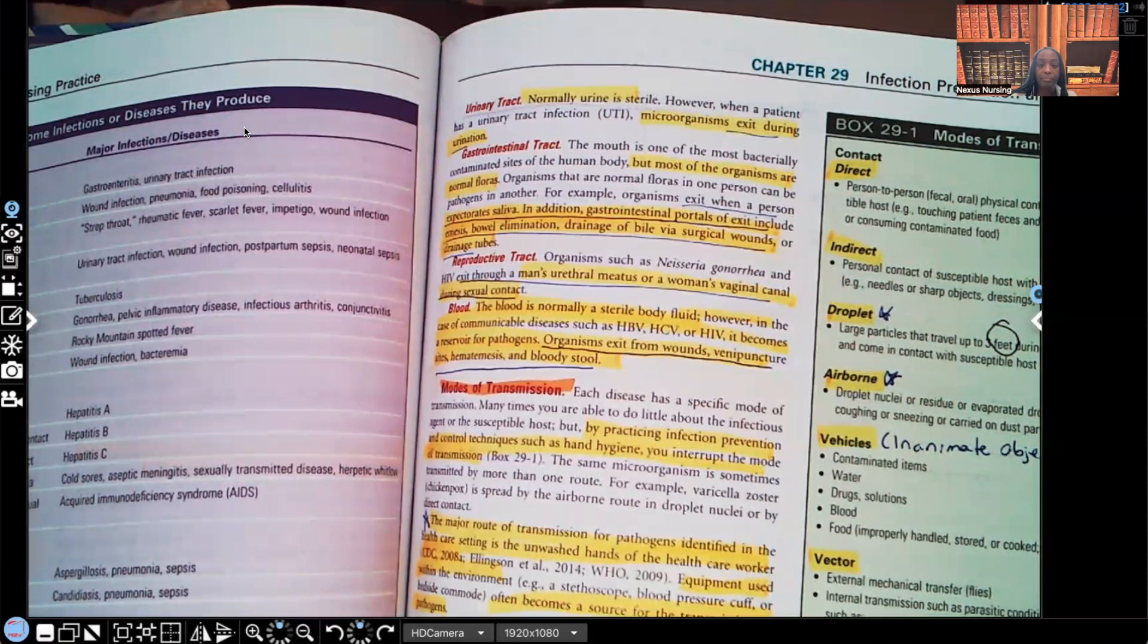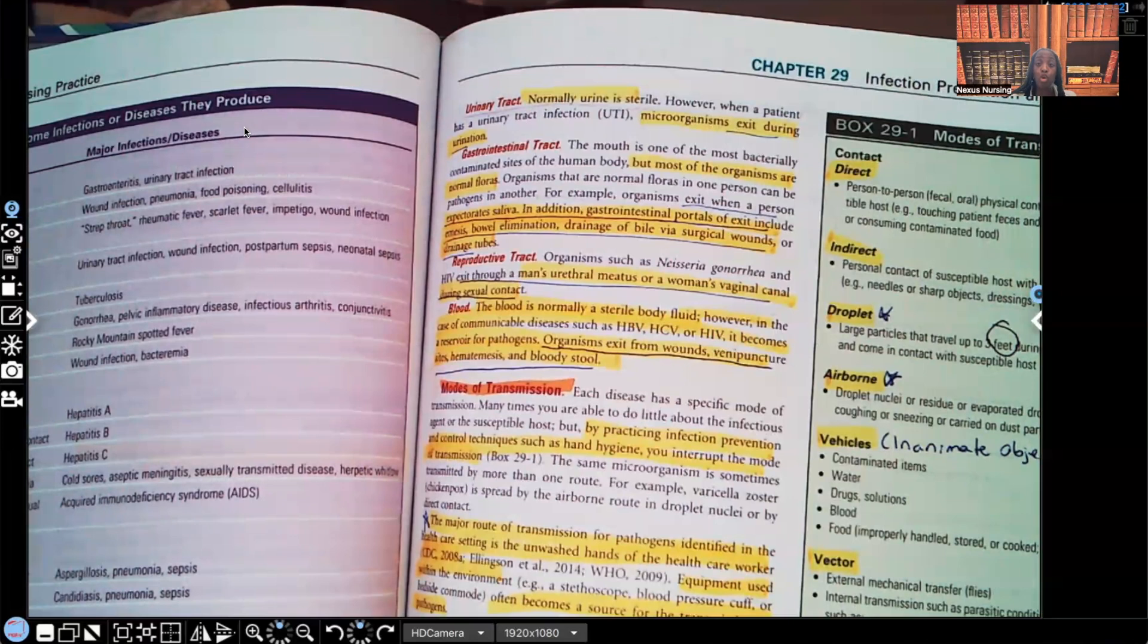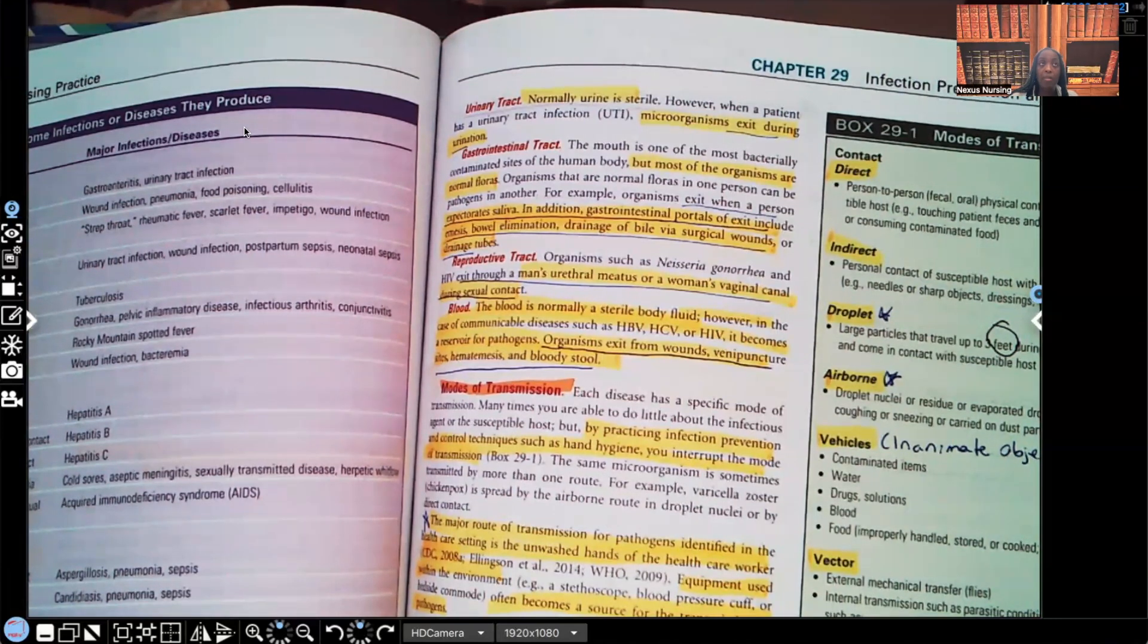Reproductive tract. Organisms such as gonorrhea and HIV, they exit through a man's urethral meatus or a woman's vaginal canal during sexual contact. So that's how pathogens can exit the body through the reproductive tract. Let's talk about blood. The blood is normally a sterile body fluid. However, in cases of communicable diseases, such as hepatitis B, hepatitis C, HIV, it becomes a reservoir for pathogens. So normally your blood is a sterile environment, but patients who are infected with these types of viruses, that same blood that was supposed to be a sterile environment has now become a reservoir. Organisms exit from wounds, venipuncture sites, hematemesis, and bloody stools. So all of those means are ways that the microorganisms are exiting the body through the blood.